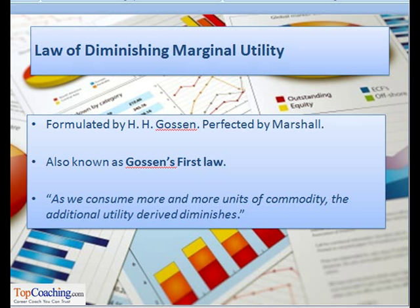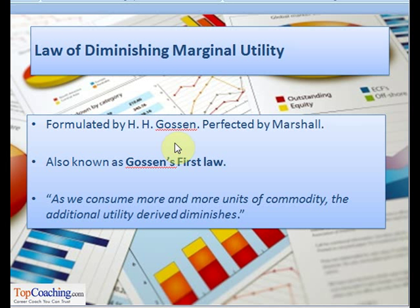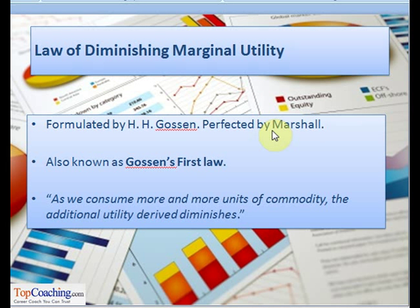A related concept is the law of diminishing marginal utility. This law was formulated by economist H.H. Gossen, and is therefore also known as Gossen's First Law. It was later perfected by economist Professor Marshall. The law states that as we consume more and more units of a commodity, the additional utility derived from its consumption diminishes. In other words, as a consumer consumes more of a commodity, total utility will increase but at a decreasing rate.